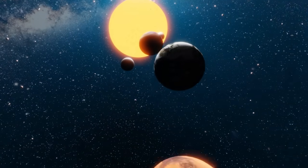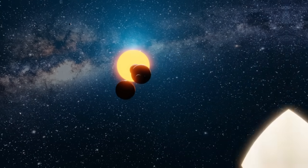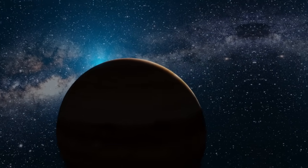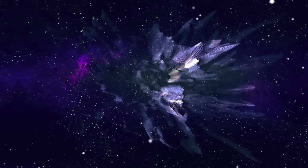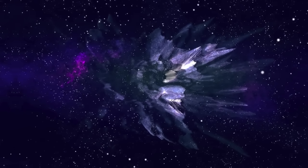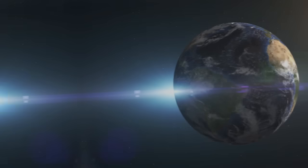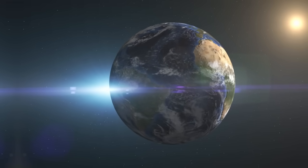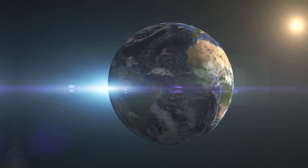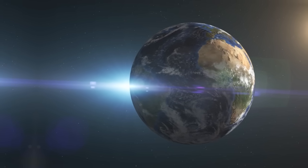Second, his use of epicycles—circles within circles—to explain planetary motion was extremely complex and increasingly inefficient. As new observations came in, the model had to be endlessly adjusted, but it still failed to reveal the true structure of the solar system. Third, Ptolemy's system included inaccurate distances and planetary speeds. For example, the orbits and velocities he calculated didn't match the actual paths of the planets, leading to significant errors in predictions.